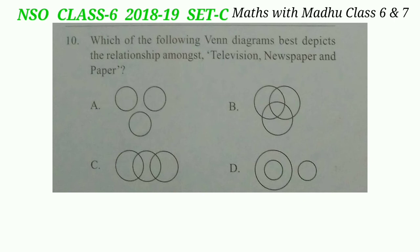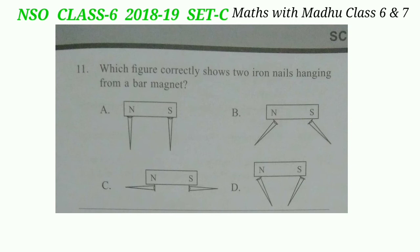Question 10: which of the following Venn diagrams best depicts the relationship among television, newspaper, and paper? The correct answer will be option D, because newspaper and paper are the same material.